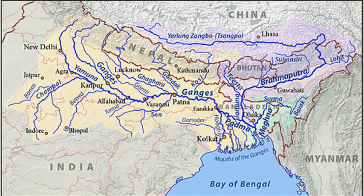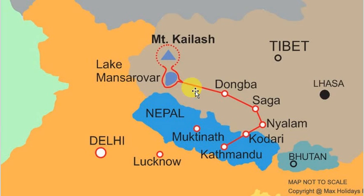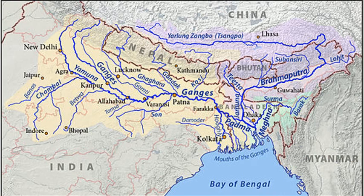The Brahmaputra River originates in Tibet, where it is called Sangpo. It rises from a glacier named Chamayung Dung Glacier, located near Mansarover Lake. The river enters India through Arunachal Pradesh and brings a large amount of silt.